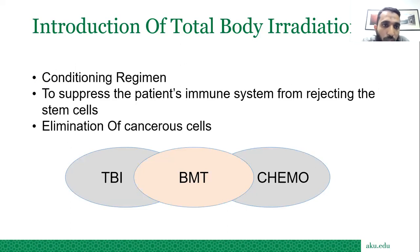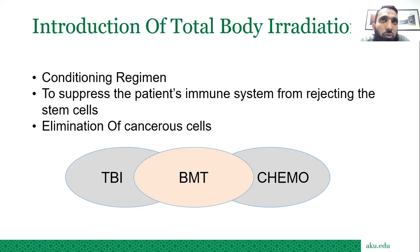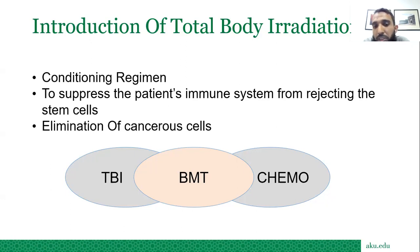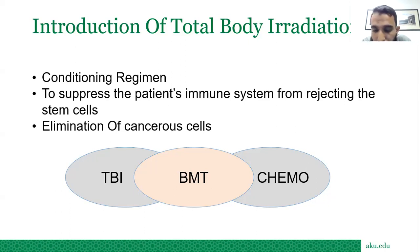TBI is used as a conditioning regime to support chemotherapy in bone marrow transplant. Our bone marrow is the hub of blood cells. TBI suppresses the patient's immune system, reducing chances of rejection of stem cell transplant. It also eliminates cancerous cells within the patient — that is the intention of total body radiation.